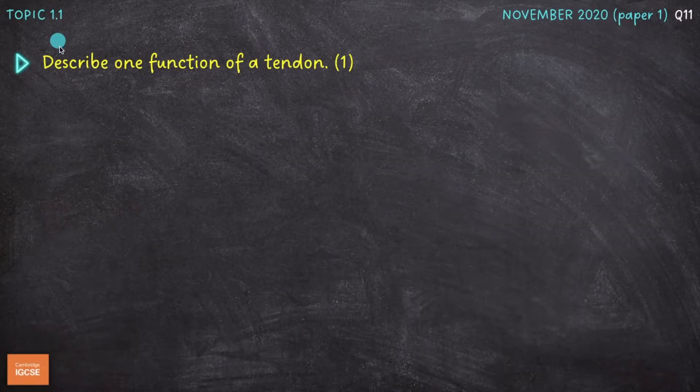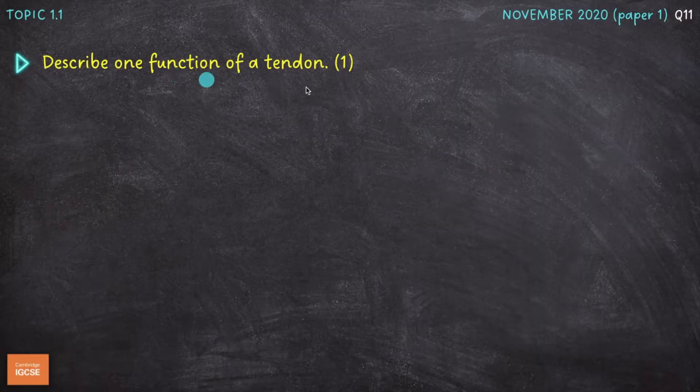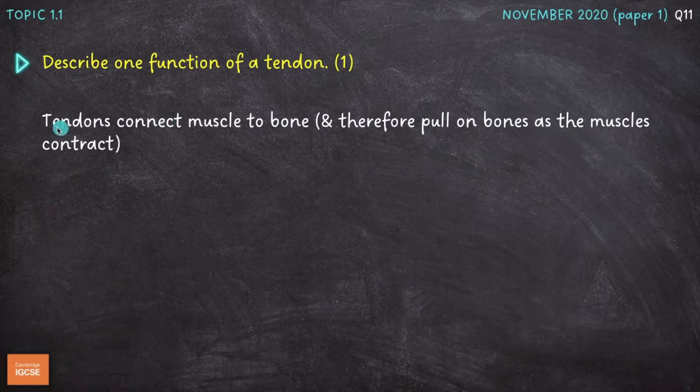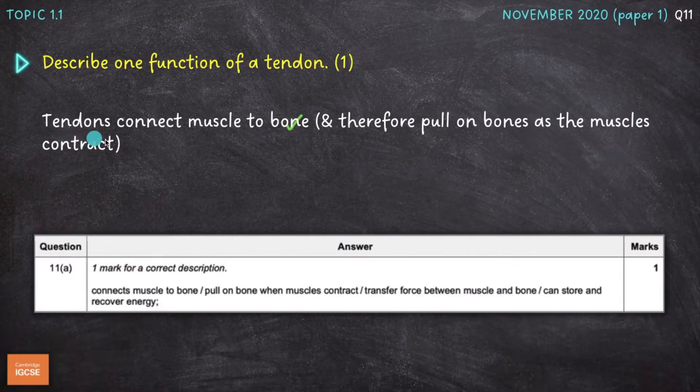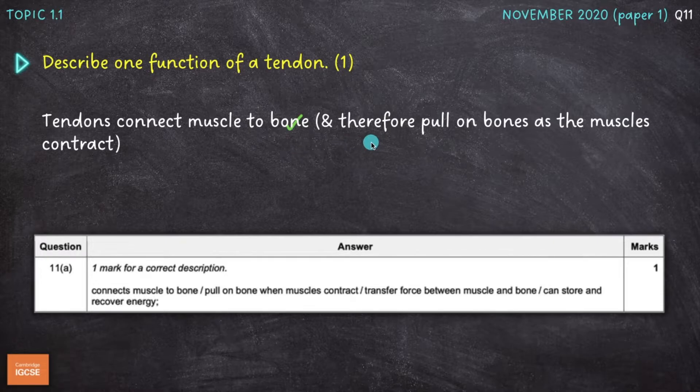So the next question on topic 1.1 is describe one function of a tendon. So what do tendons do? What's their function or role? Well, tendons connect muscle to bone and therefore pull on bones as the muscles contract, enabling movement. So we would have got a mark simply for stating that tendons connect muscle to bone, as you can see down there in the mark scheme. But I've added a bit of additional detail here as well. And I've said that when the muscles contract, the tendon enables the muscle to pull on the bone, therefore creating movement.